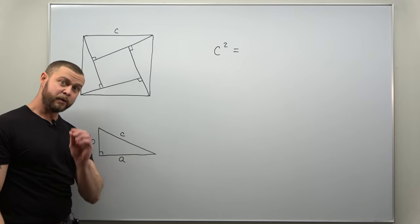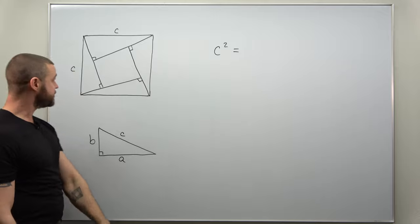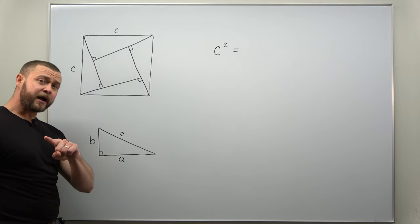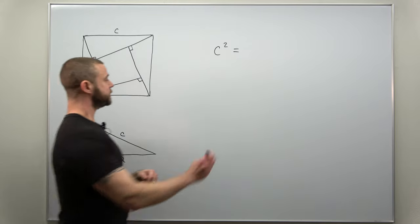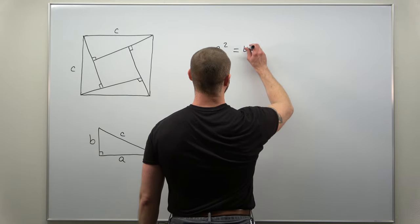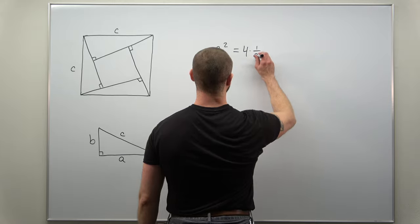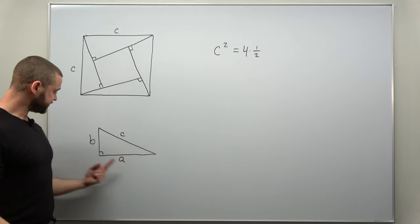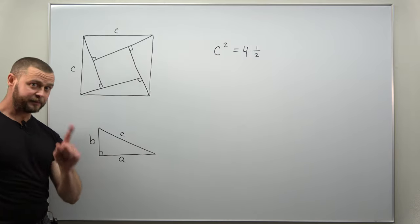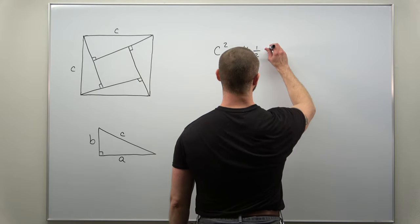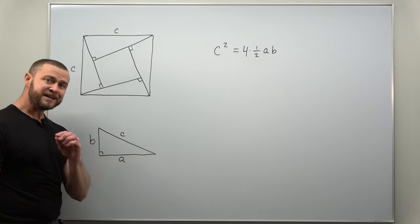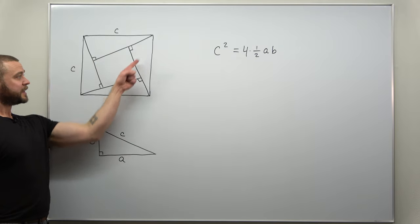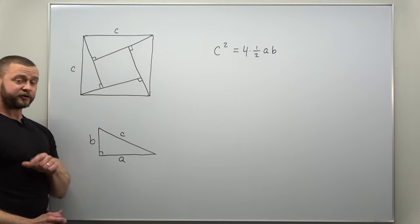Now what we're going to do to get the proof for the Pythagorean theorem is the outer area should equal the inner area. We have four right triangles. Area of a triangle is one half base times the height, so four times one half AB.